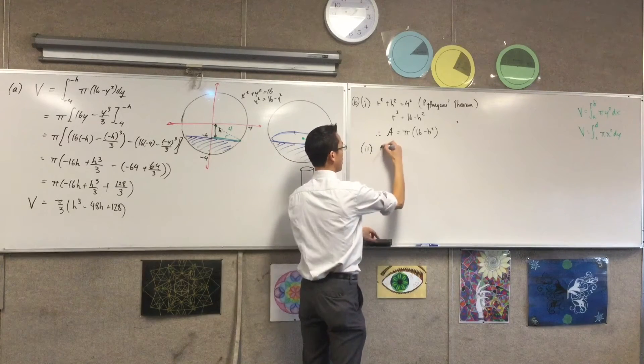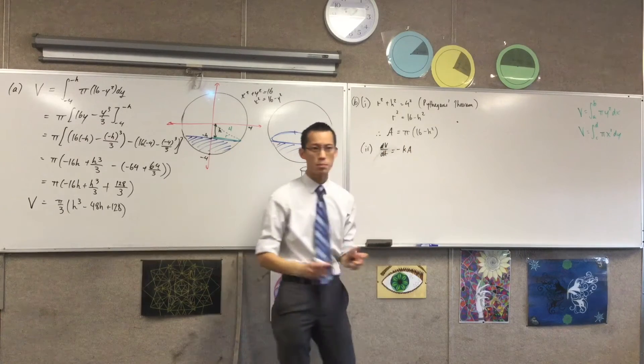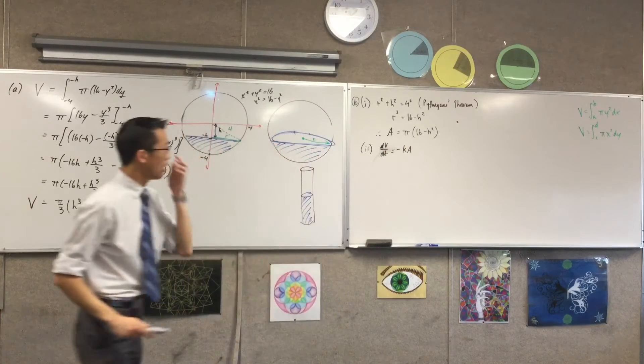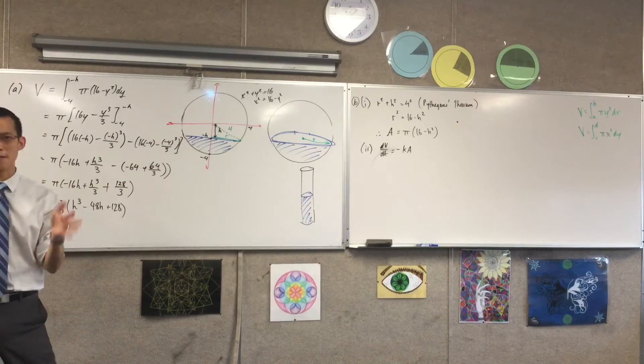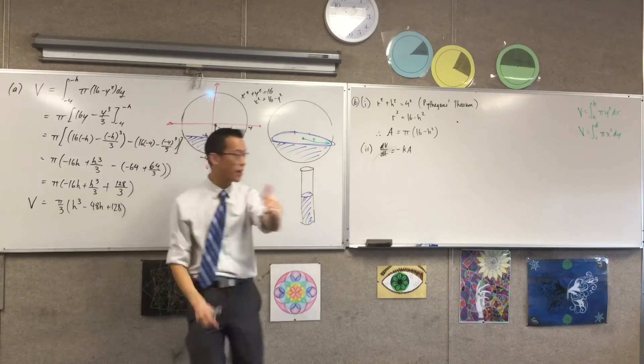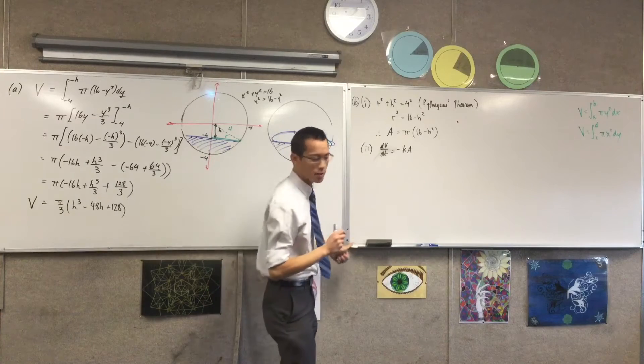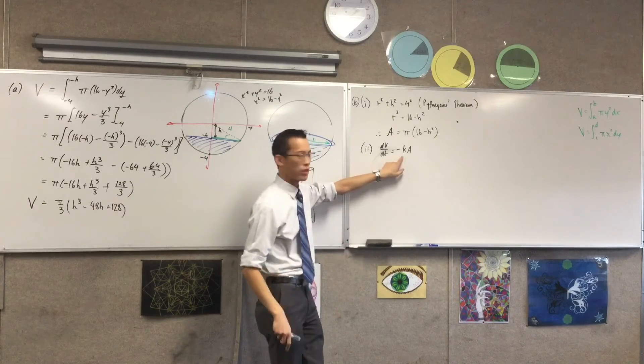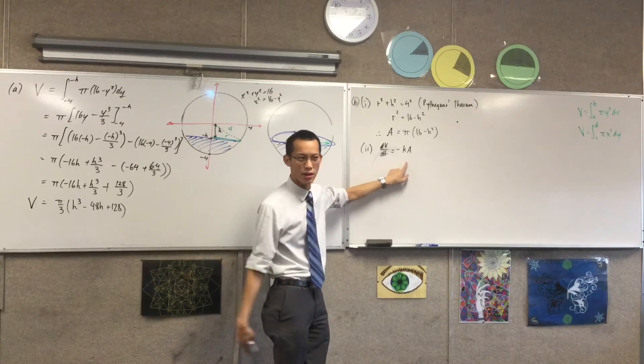We are told that dV/dt equals... Just pause for a second here. What does this statement say? This is what we love about mathematics. It boils everything down to incredibly succinct things. Okay, number one, because I think actually that they haven't said K is a positive number, but it's kind of implied that if I'm putting a minus sign here, if K were negative, I might as well just not put a negative sign at all.